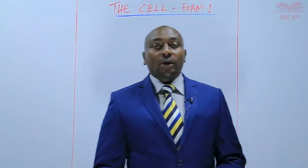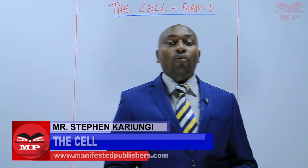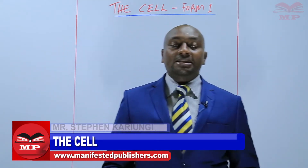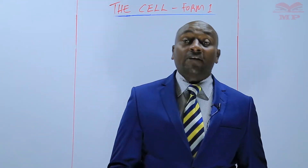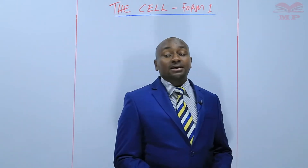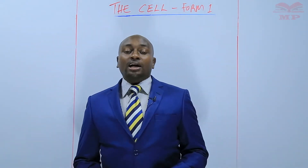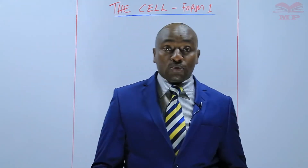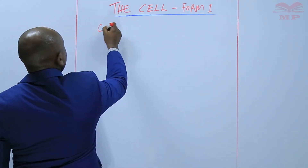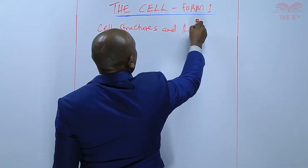Welcome to Manifested Publishers. My name is Stephen Kariungi and we'll continue with our Form 1 biology lesson. Today we are going to discuss cell structures and their functions. The previous lesson we learned about the various cell structures as observed under an electron microscope and also as observed under a light microscope. So we are going to look at those structures in more detail.